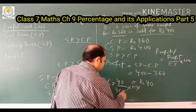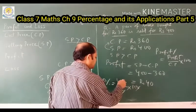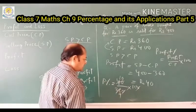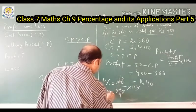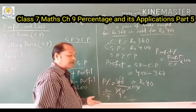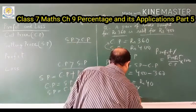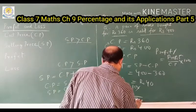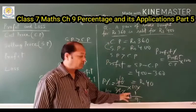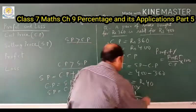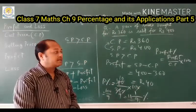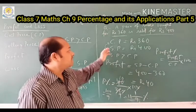Simplifying: 40/360 × 100. We can cancel: 40 and 360 give 1 and 9, so we get 100/9. Converting to a mixed fraction: 100 ÷ 9 = 11 remainder 1, so the profit percentage is 11 and 1/9 percent.